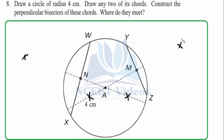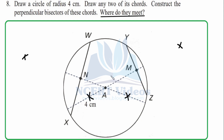After constructing both perpendicular bisectors, observe where they meet. They always meet at the center of the circle. This is the key result: whenever the perpendicular bisector of a chord is drawn, it always passes through the center. That was question 8.